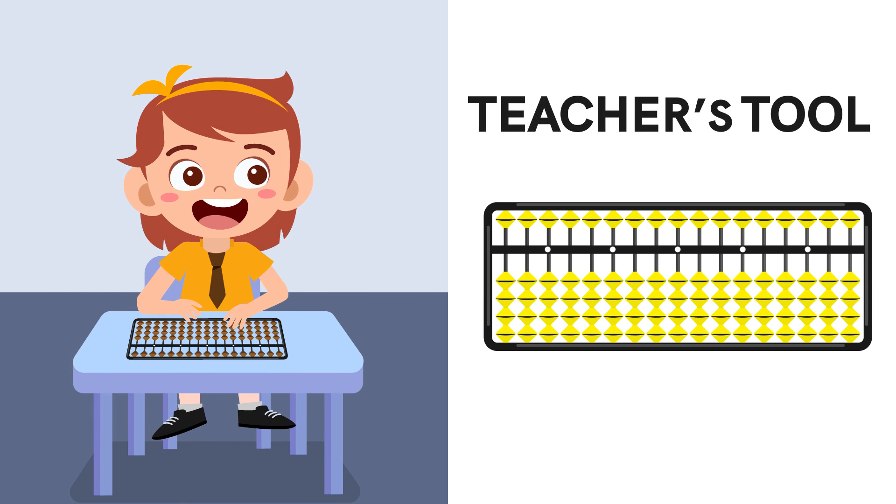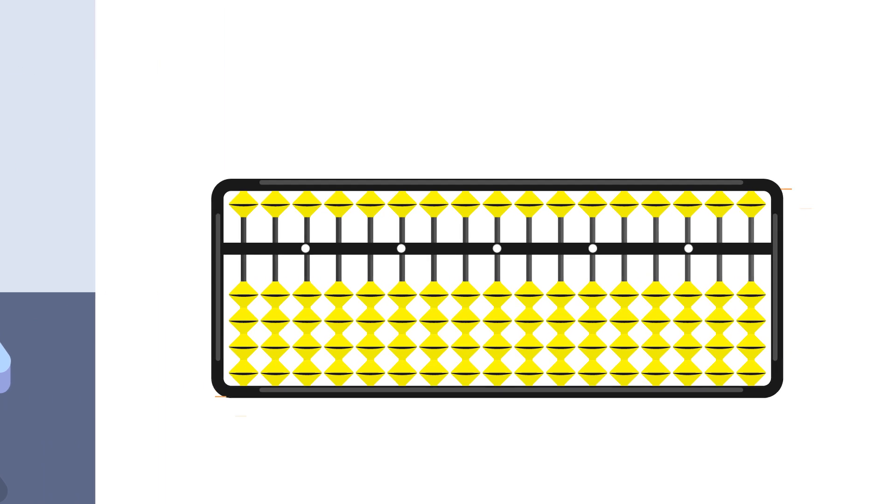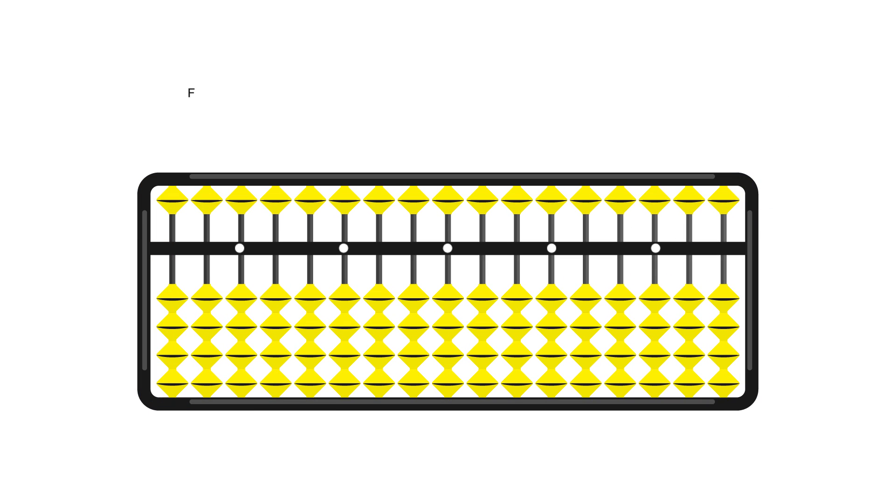The answer is, it's the teacher's tool. Very good, Ruby. The black edging that you see here is called the frame. The horizontal line that divides the tool into two parts is called the counting bar or the center bar.